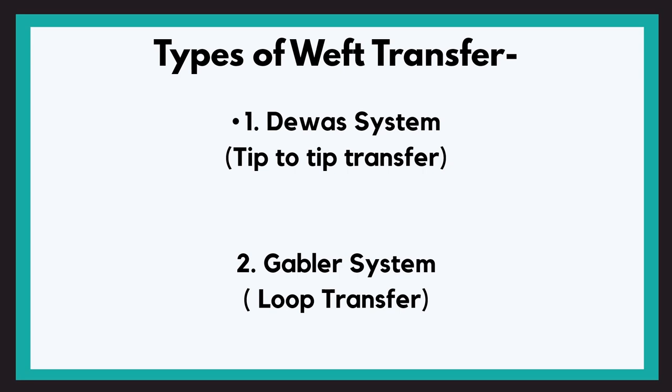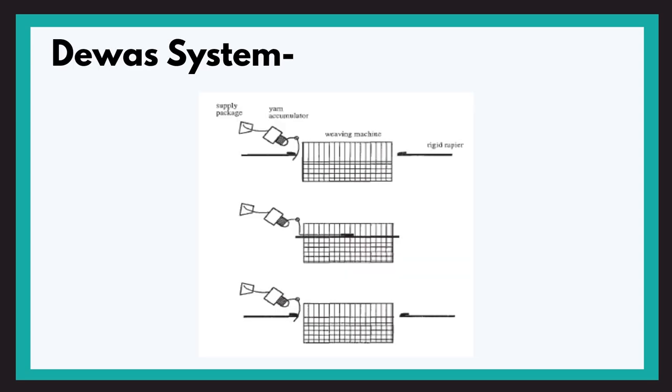Okay, so let us move on to different weft transfer systems. Number one, Devas, which is tip to tip transfer and the second one is Gabler, that is loop transfer. So in Devas system, pay close attention. The giver grips the tip of the yarn and transfers it to the taker, which retracts and the yarn is carried to the other side, as shown in the image below.